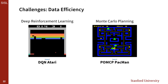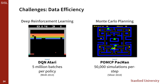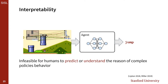Both Monte Carlo planning and reinforcement learning are powerful in their generality, meaning we can use the same algorithms to solve a wide variety of problems without feature-specific engineering. This generality, however, comes at a cost—data. Both types of methods typically require massive amounts of data to adequately solve even simple problems. For example, solving Breakout on Atari using DQN requires five million batches of sample data, and solving Pac-Man using the Monte Carlo planning method POMCP requires 50,000 simulations per step. Clearly, if these simple problems require this much data, much more work is needed to scale up these methods to more complex real-world problems.